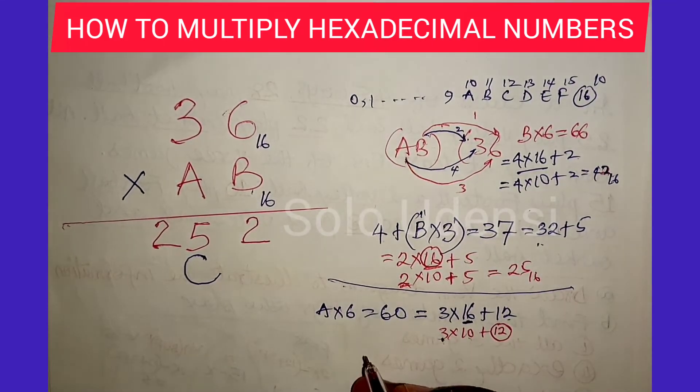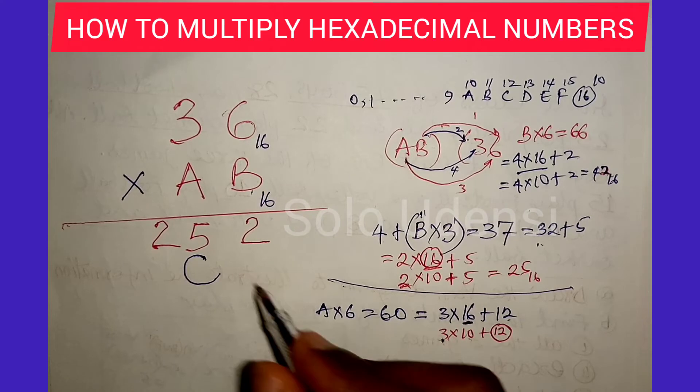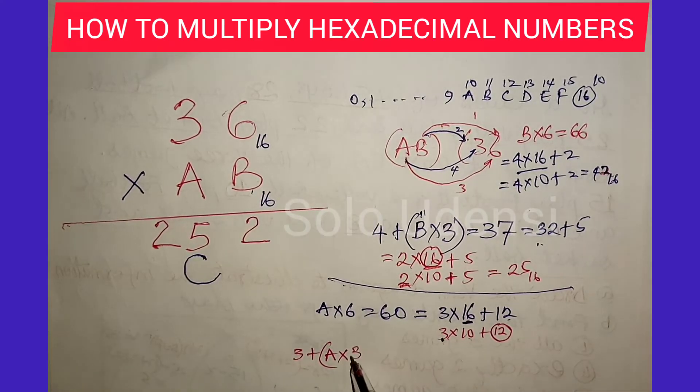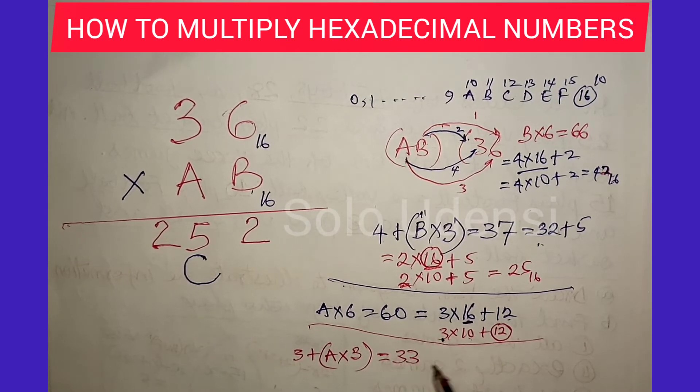In the next one, 3 plus A times 3. A times 3, and it will give us, this is 10, 30, 33. It will give us 33.